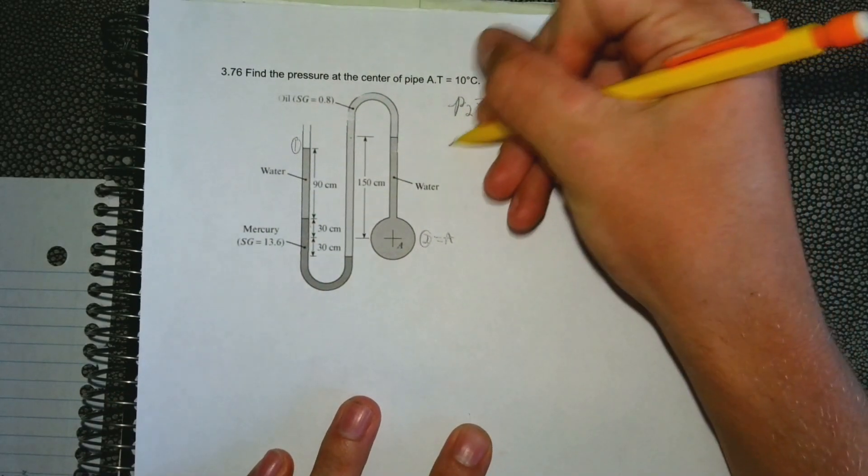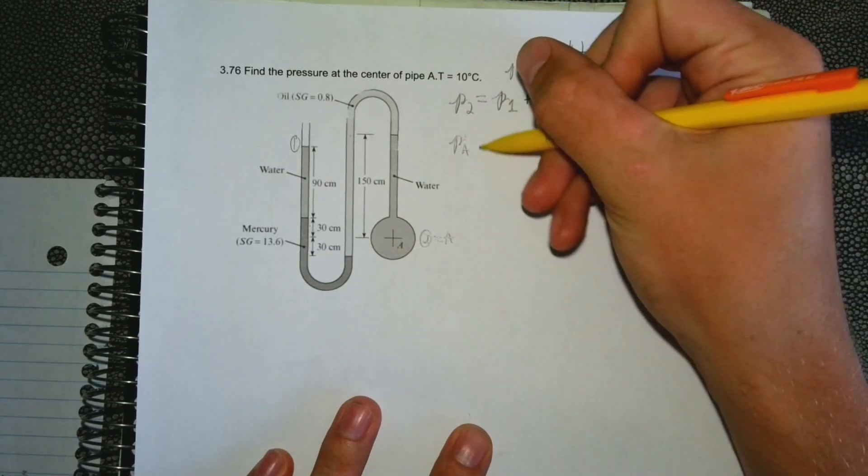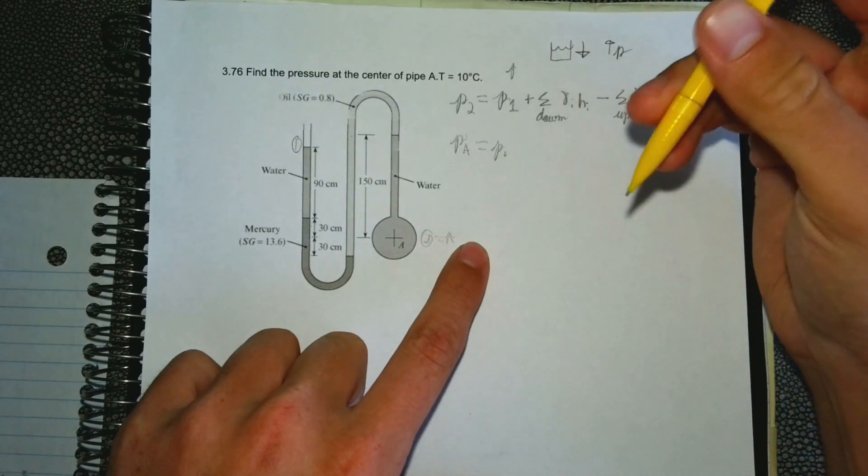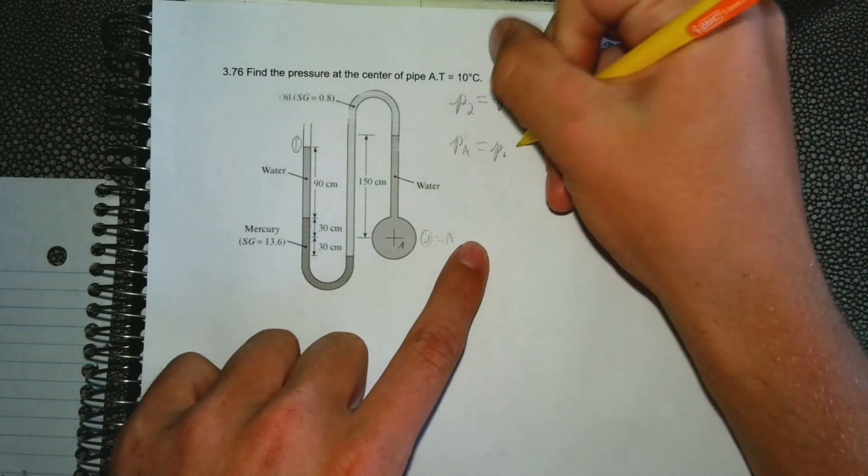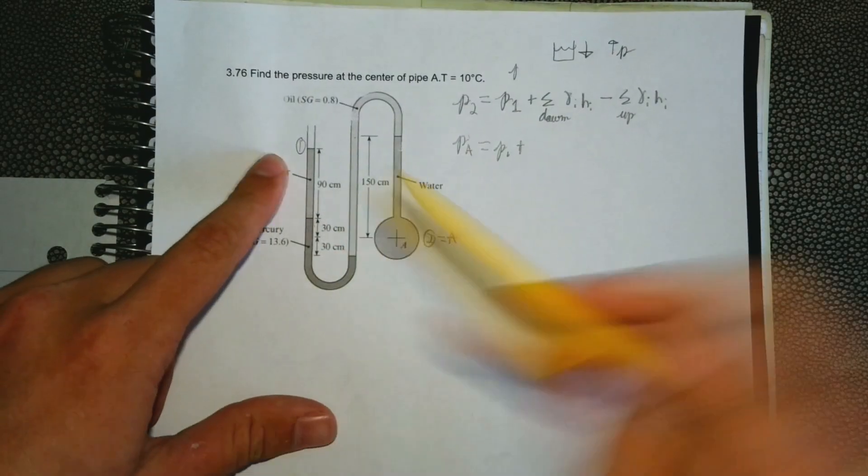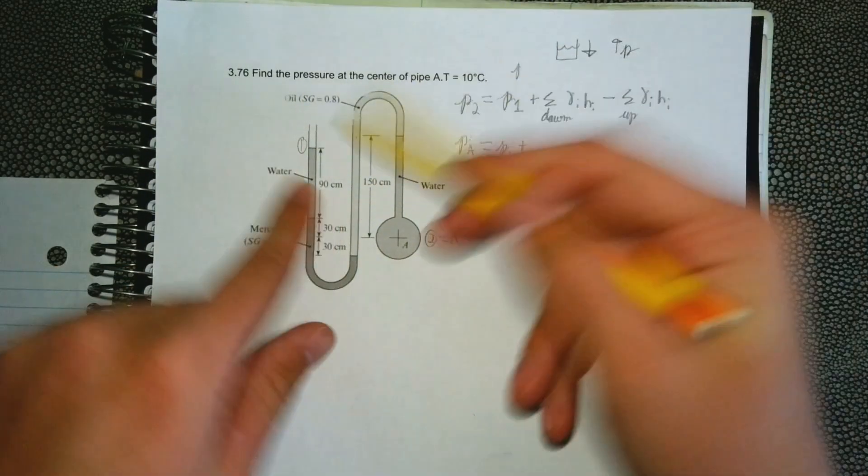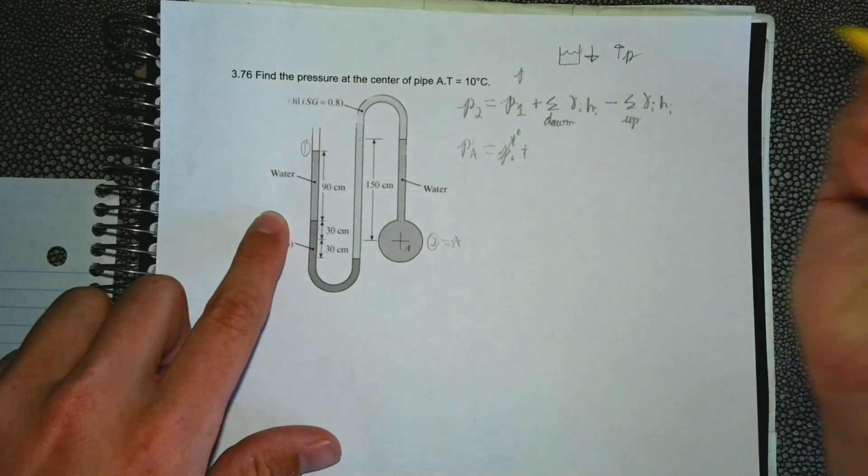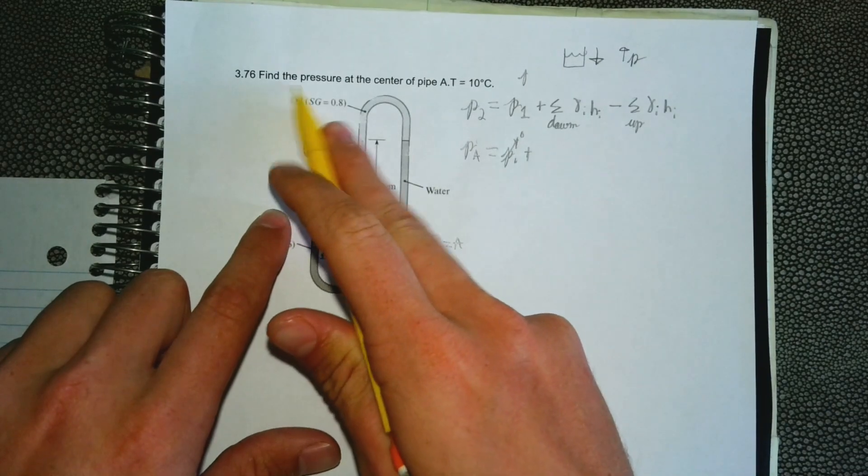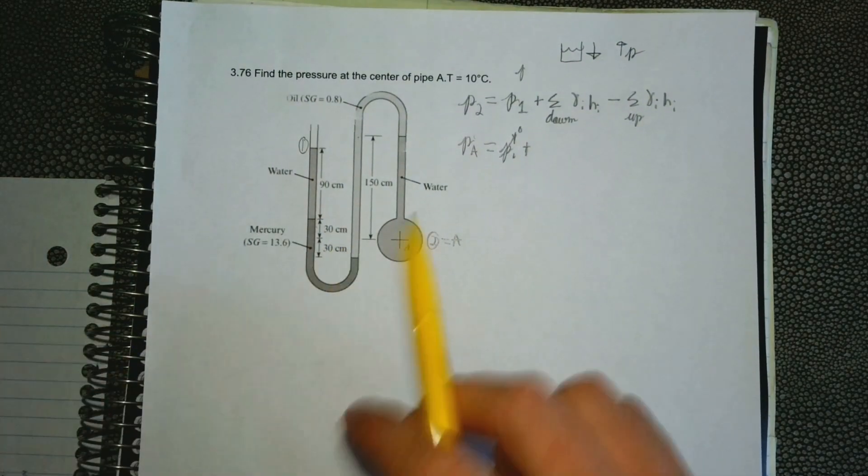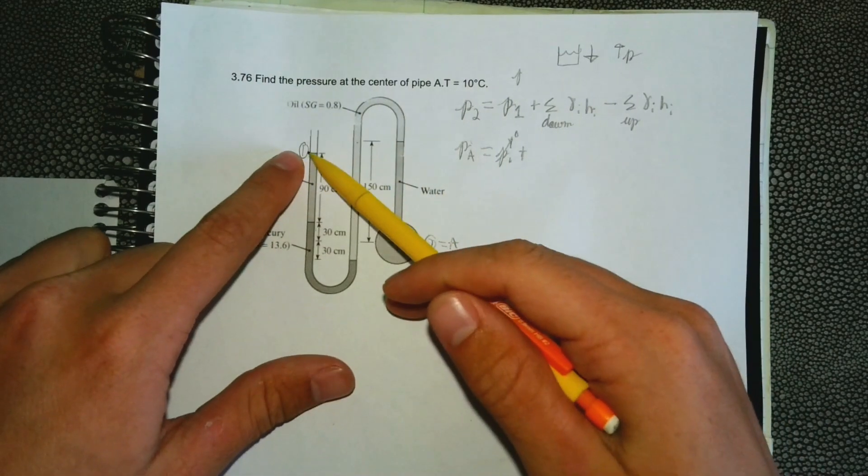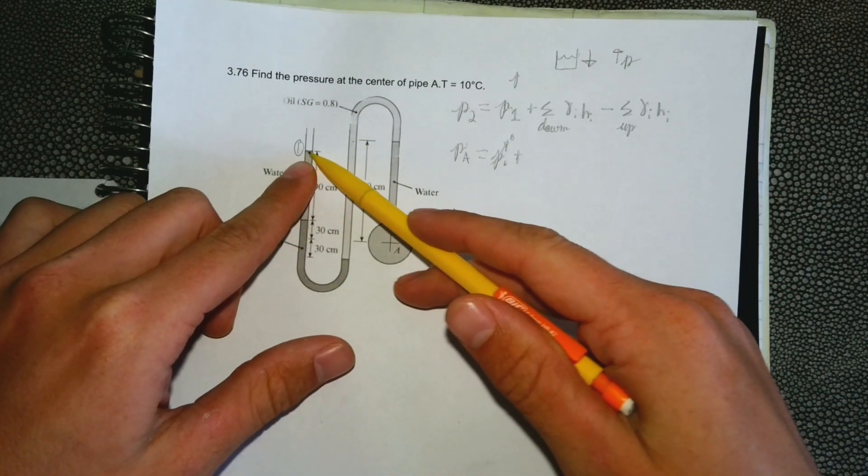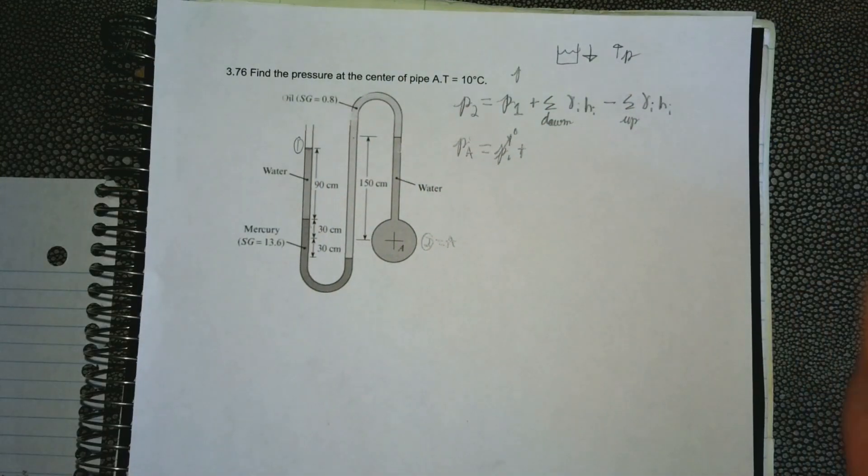Let's do this formula. We'll write this to be P2 is equal to PA. If we start from this surface, since this surface is exposed to the atmosphere we know that this is just zero, right? That's zero because we're looking for gauge here. Every time it just says to find the pressure, it doesn't say absolute, we're going to assume it wants the gauge. So we're looking for gauge here, it's exposed to the atmosphere so it's zero, zero units gauge.